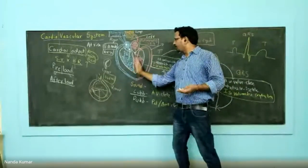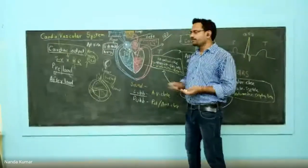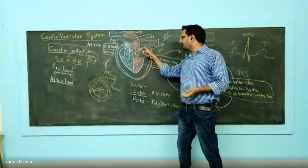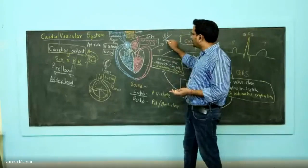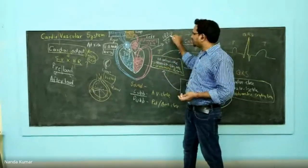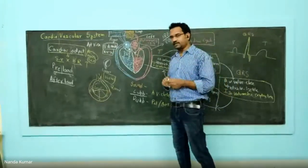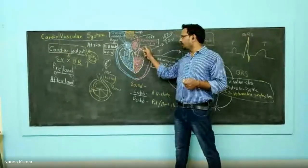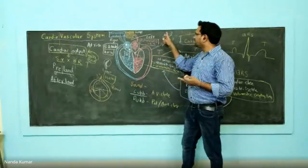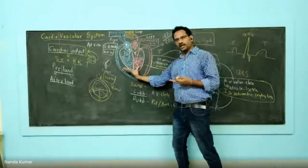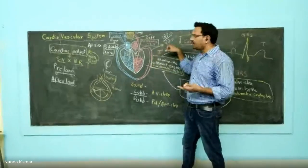When ventricles contract, blood comes into the aorta and the pressure will be 120 mmHg. When the ventricle dilates, blood moves out to the circulation and the pressure falls to 80 mmHg. So 120 is called systolic blood pressure and 80 is called diastolic blood pressure. When ventricle contracts, blood reaches the aorta and pressure rises to 120 mmHg. When ventricle relaxes, blood moves out of the aorta and pressure is 80 mmHg.